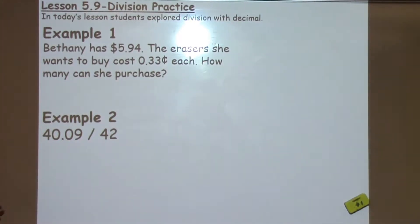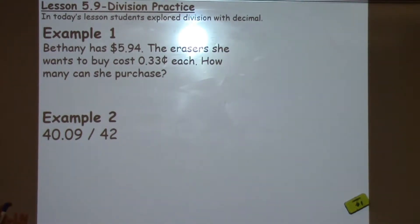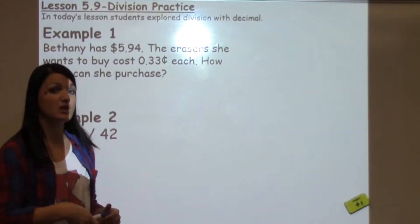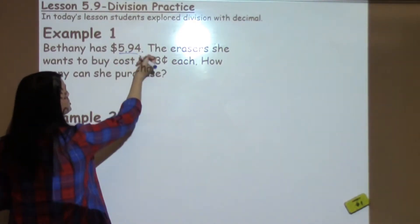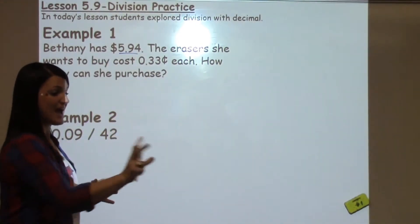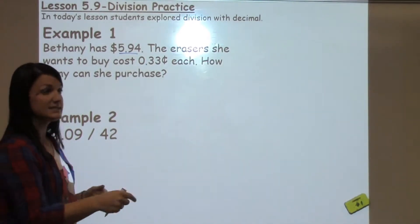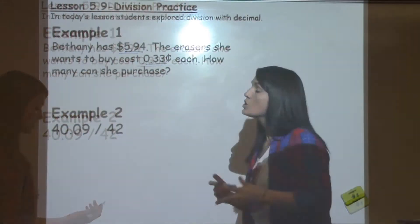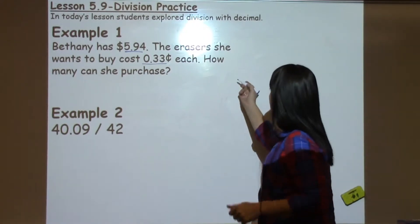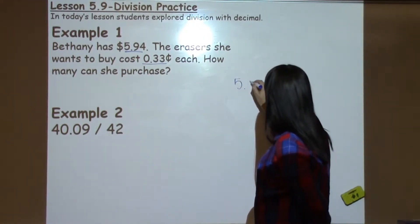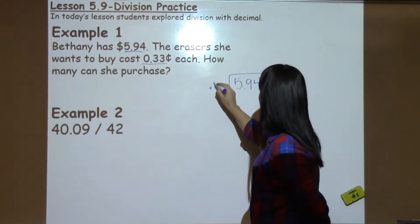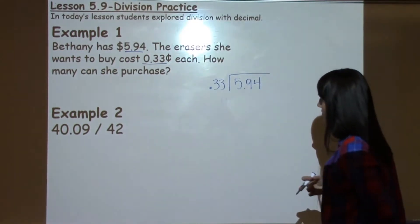Example one says, Bethany has $5.94. The eraser she wants to buy costs $0.33 each. How many can she purchase? When we think about the whole or what do I have, Bethany has $5.94. She wants to split that up and figure out how much can I separate into $0.33 chunks to buy these erasers that I want to buy. We'll go ahead and set this up as a division problem. $5.94 is on the inside because that's what I'm separating, and I'm separating it in $0.33 chunks, so I want to put that on the outside.